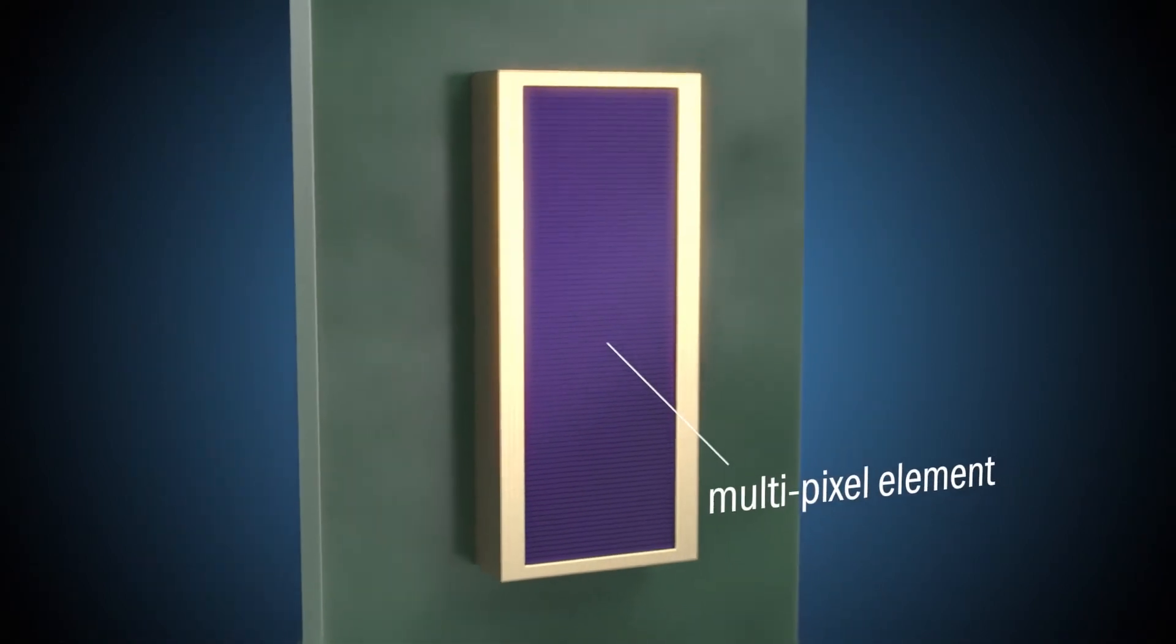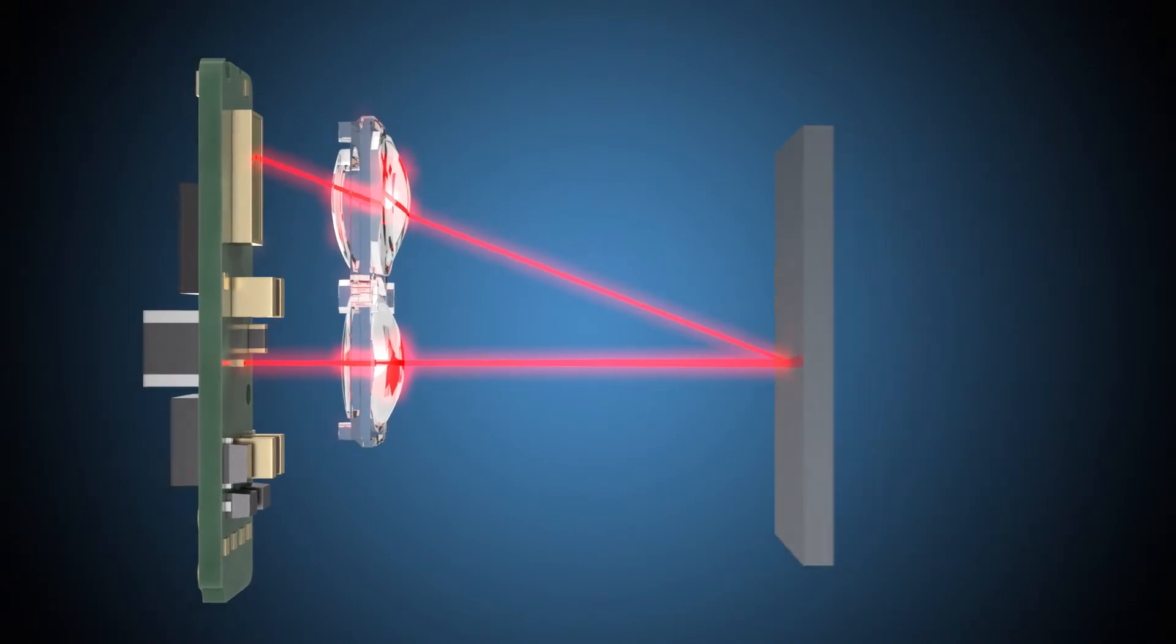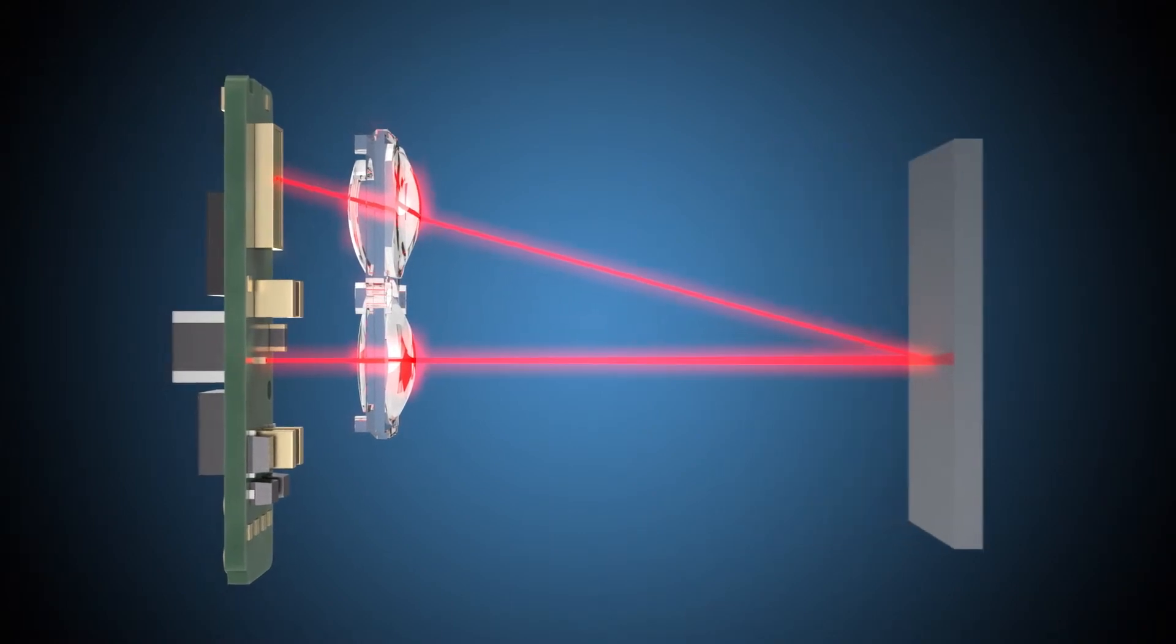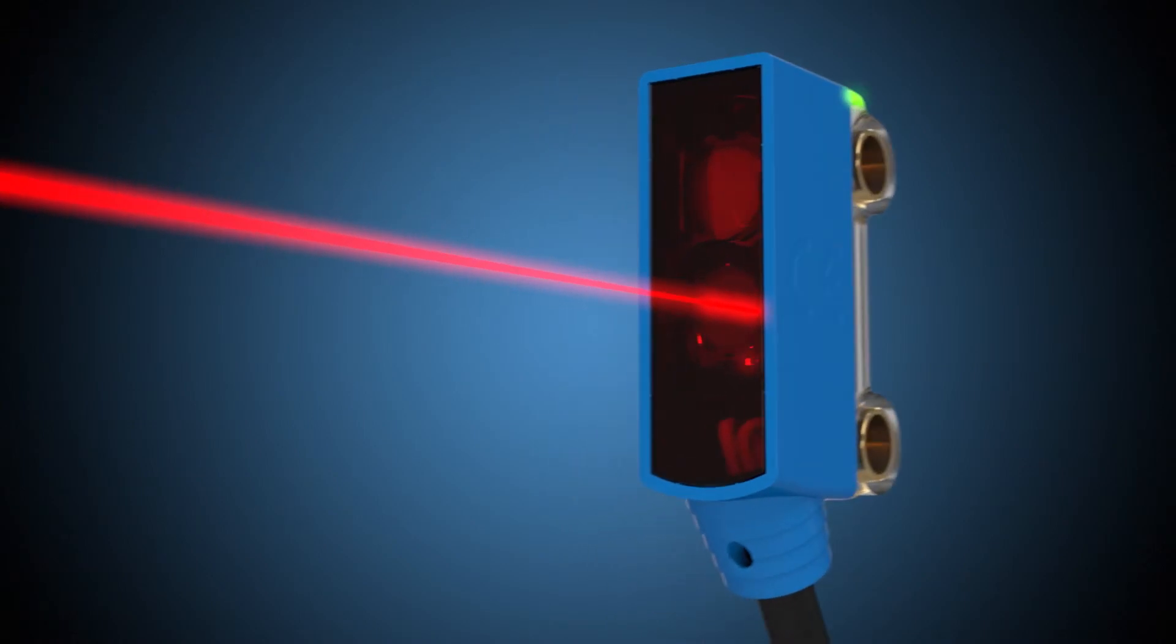The multi-pixel element that forms part of the Ciric chipset enables highly precise setting of the switching distance, reliable object detection and differentiation between different backgrounds. The only thing you won't see with the W2-S2 sensors is a lack of choice.